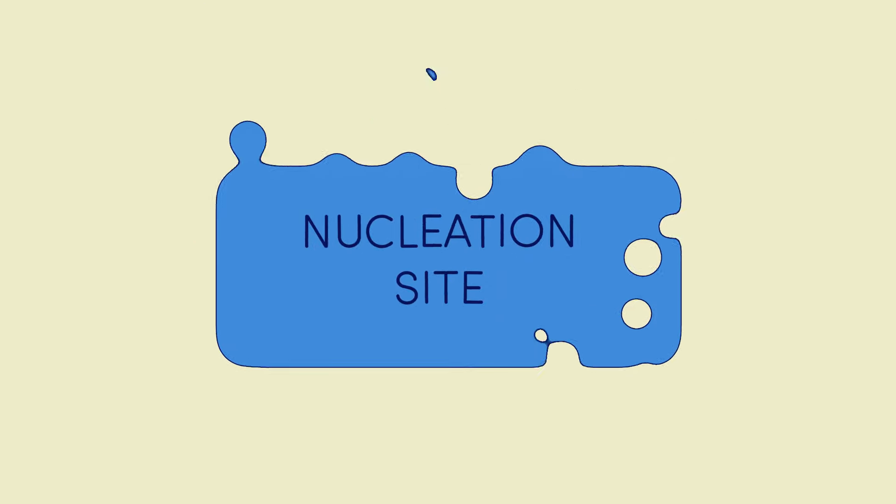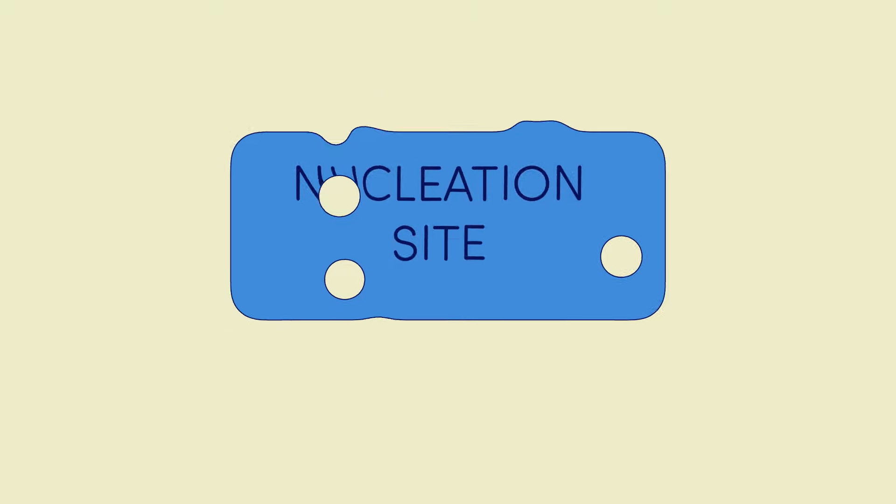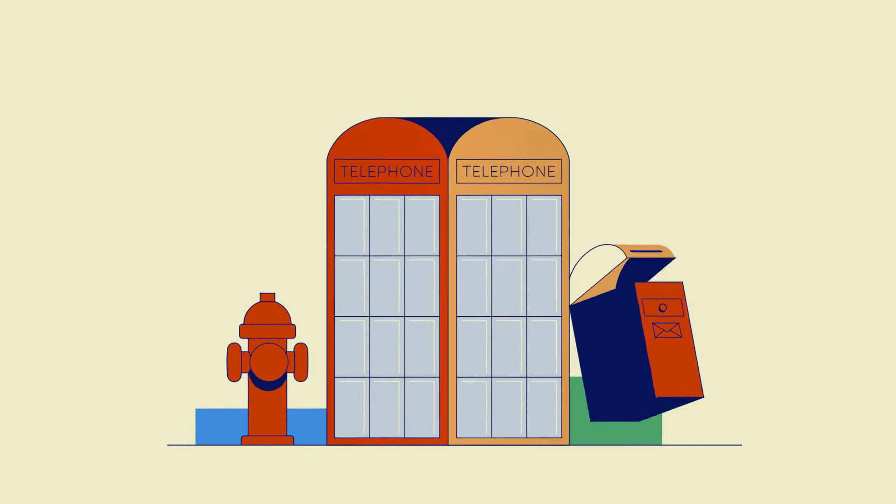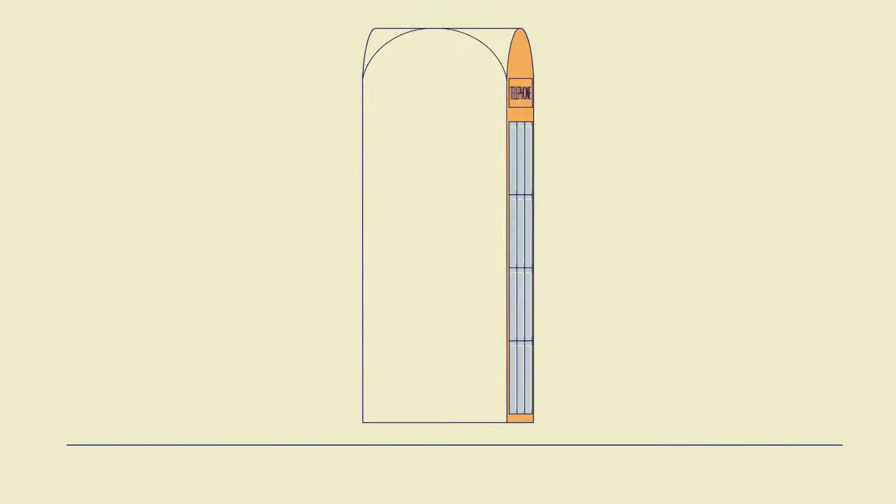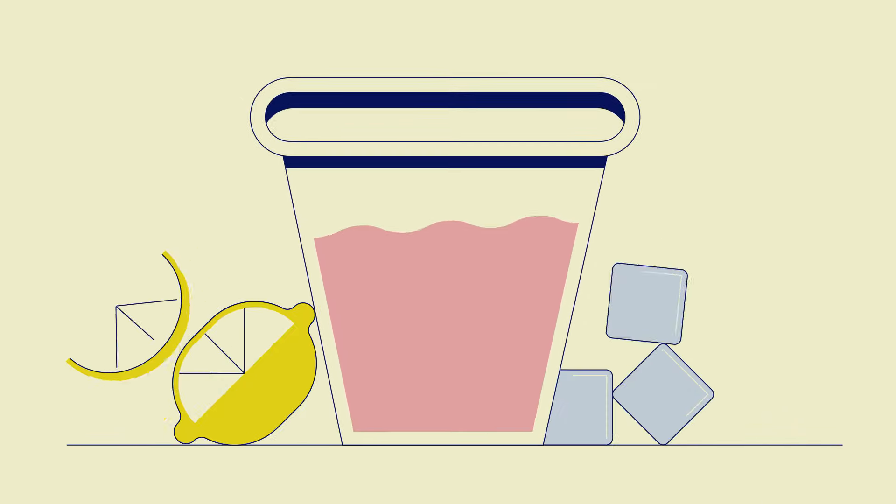I know, I know, a what site? Just like Clark Kent needs a phone booth to change into Superman, dissolved carbon dioxide needs a special place to become a bubble, a nucleation site.